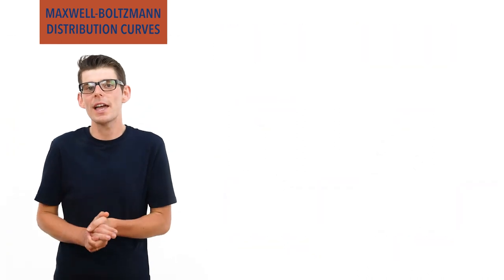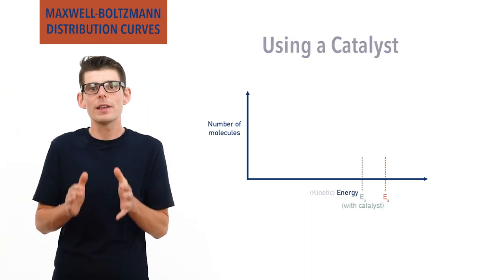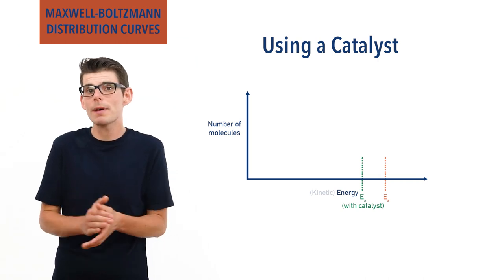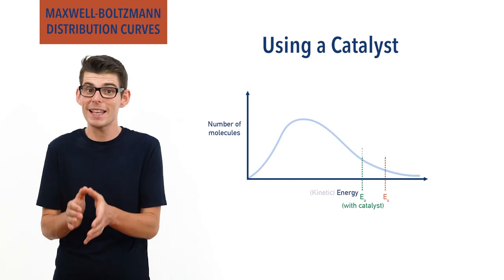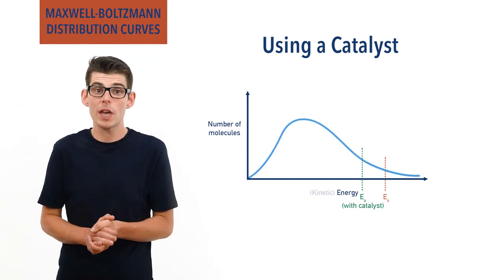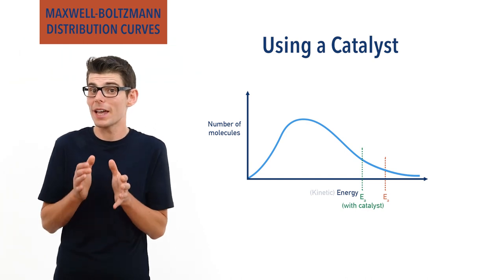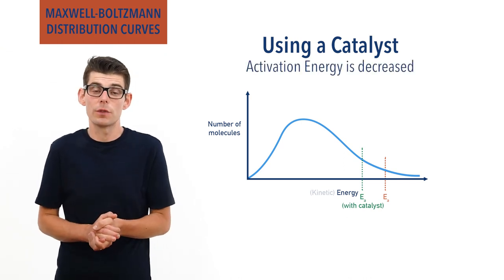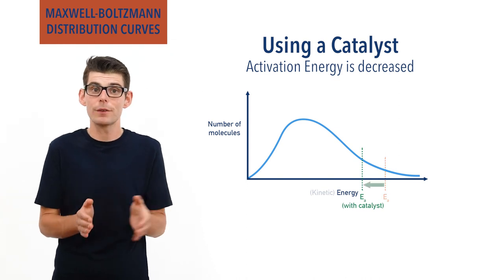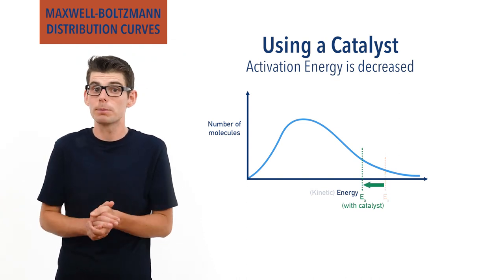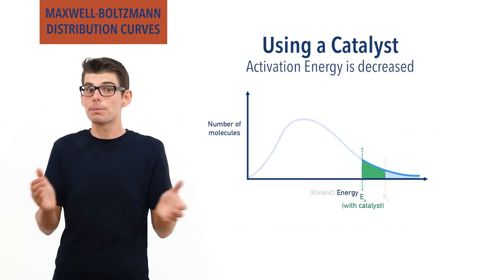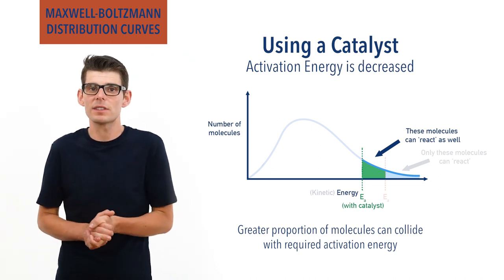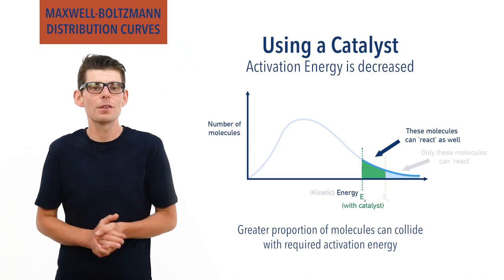If the activation energy of a reaction is lowered by using a catalyst, then more molecules end up having the required activation energy. The shape of the Maxwell-Boltzmann distribution curve remains the same, as neither the temperature nor concentration is being changed. The only difference is where the activation energy mark is on the x-axis. As a catalyst decreases the activation energy, the mark moves to the left and the area under the curve past this point to the right increases. A greater proportion of molecules colliding with the required activation energy means an increase in the frequency of successful collisions, and therefore an increase in the rate of reaction.